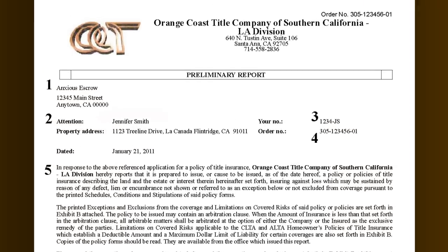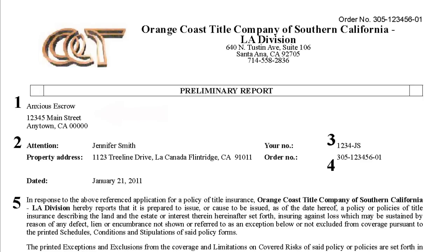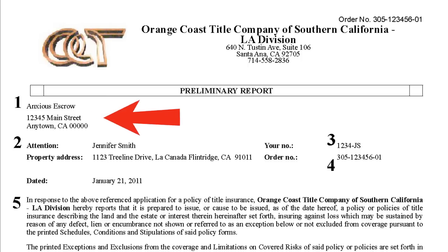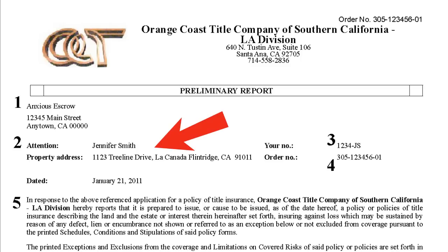Item number one is the name and address of the firm that requested the preliminary title report. This normally is the escrow holder that is called to open up the title order. Item number two is the name of the individual that requested the preliminary title report, normally known as the escrow officer.